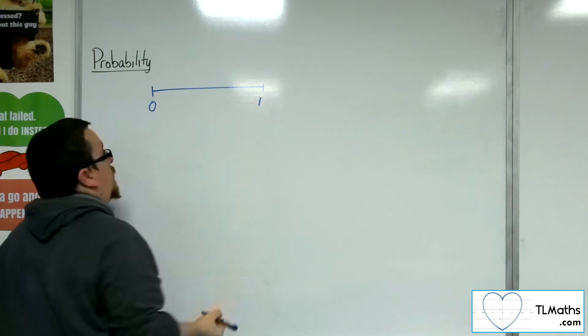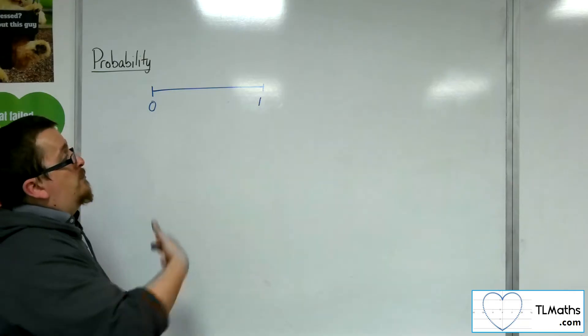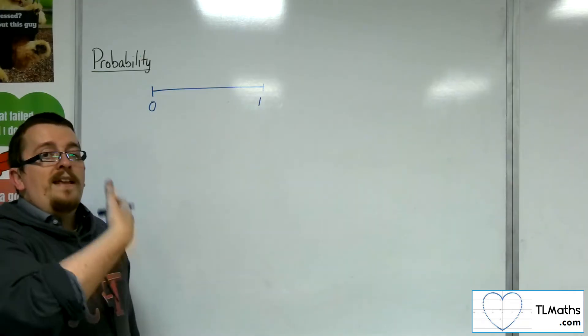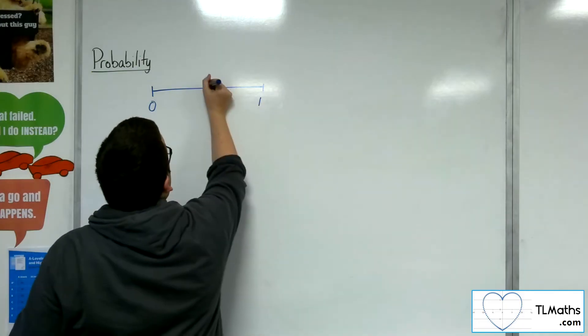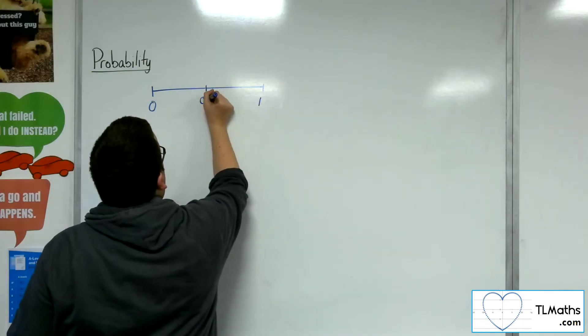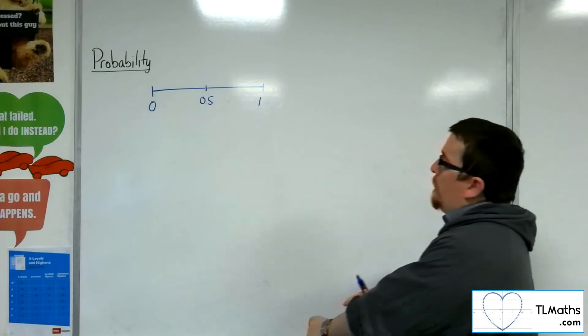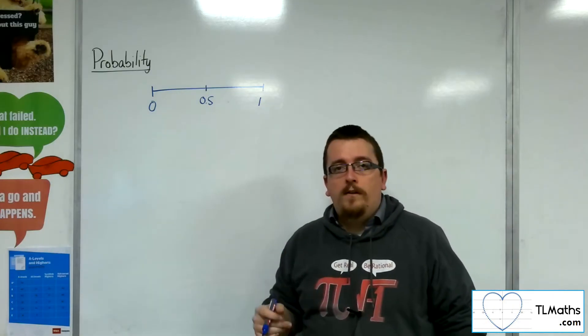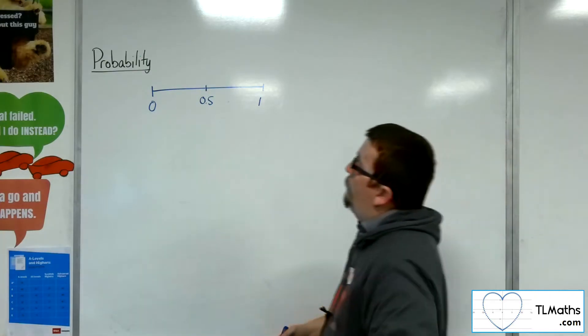So if the probability of an event is 0, then it is impossible. If the probability of the event is 1, then it is certain. And then we've got varying degrees in between where 0.5 would be an even chance of it happening. Like flipping a fair coin and it landing heads would be 0.5.